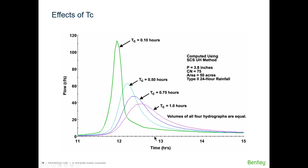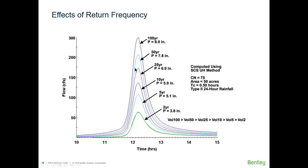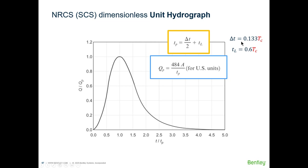What if we change the time of concentration and keep everything else the same? If you change the time of concentration, the volume of the hydrograph does not change, but the shape would change. The time of concentration determines the time to peak, and therefore the time to peak determines the peak flow.